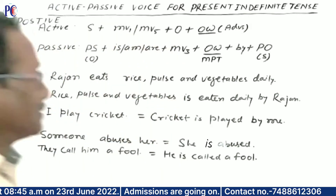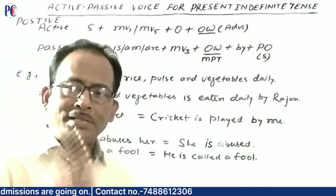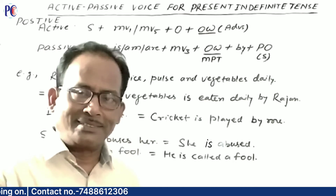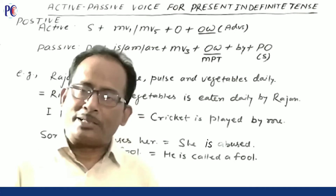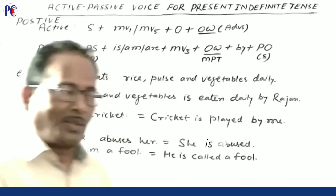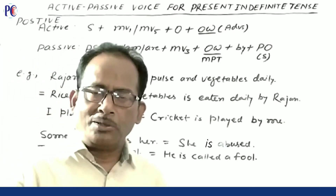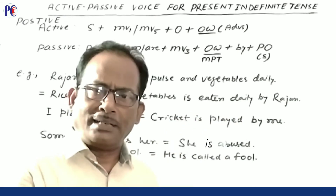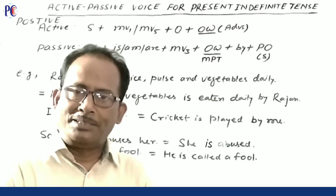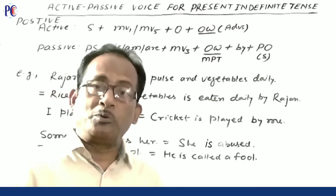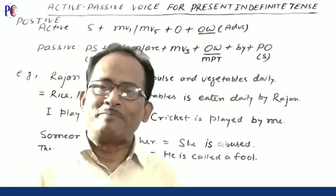Students, when you see the voice, click on the subject and object. If the subject is the doer and the object receives the action, this means the voice is active. When the action is done by the subject, the voice is active, and when the action is done to the subject, it is said to be passive.